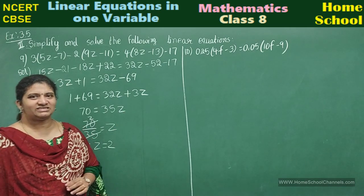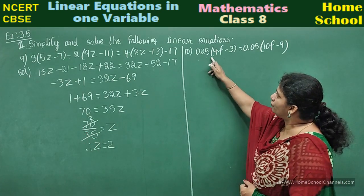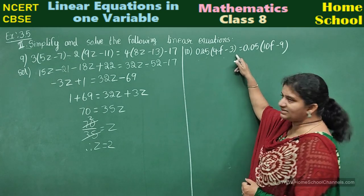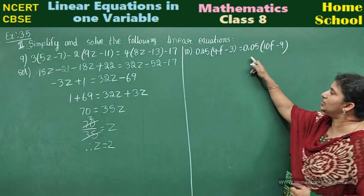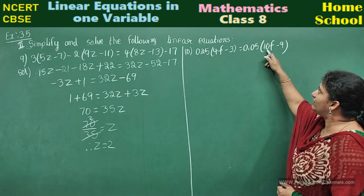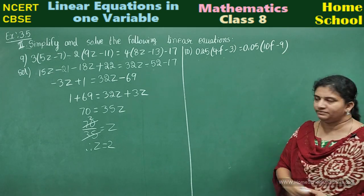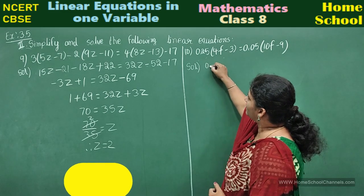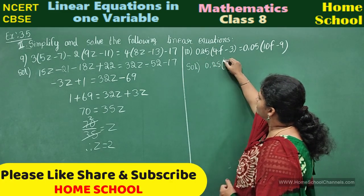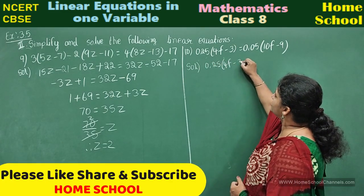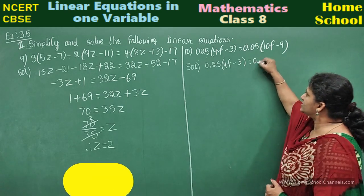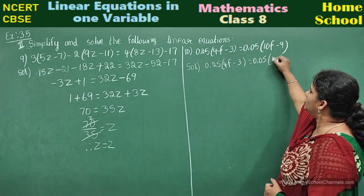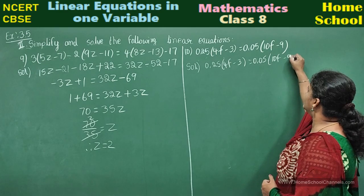Last problem in this exercise, tenth one: 0.25(4f - 3) = 0.05(10f - 9). Okay, let us start the solution here. Again, rewrite the question: 0.25(4f - 3) = 0.05(10f - 9).